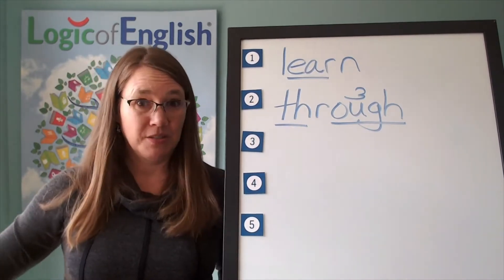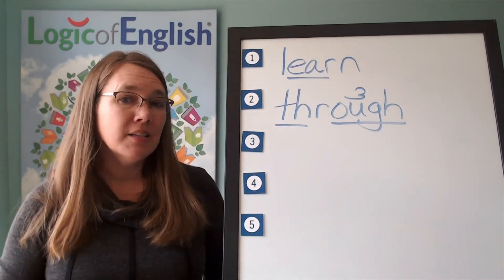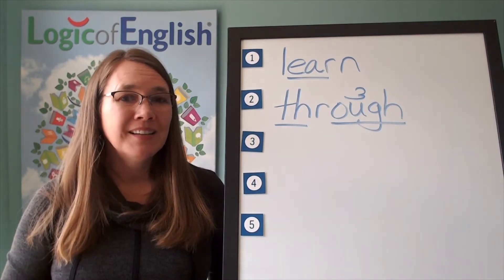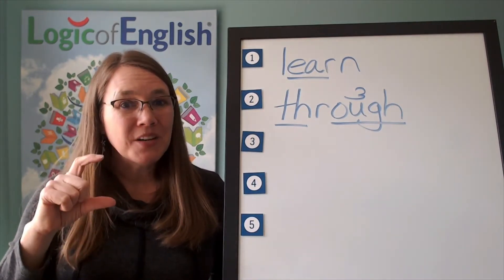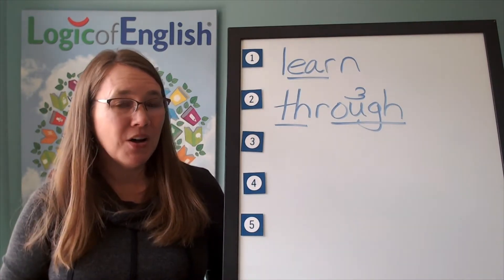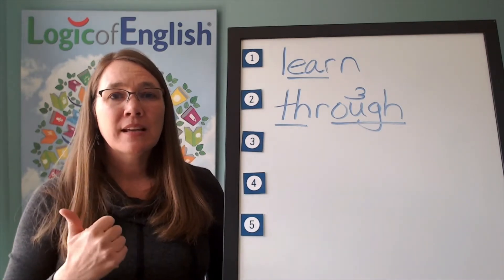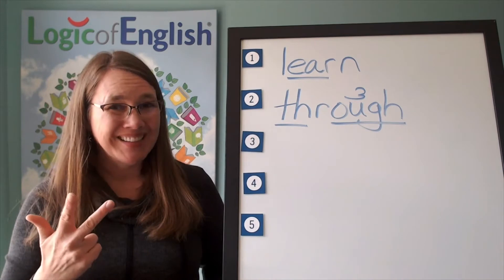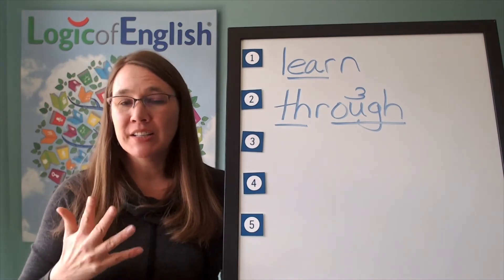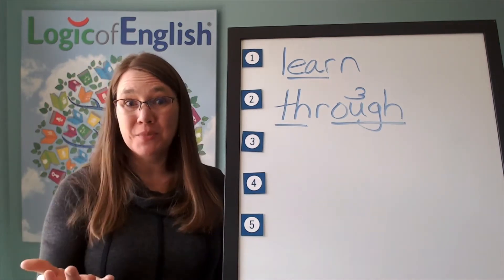The next word is 'small.' The cat is very small. Small. Go ahead and say 'small.' Let's sound it out. S-m-aw. This is an A-A-aw. L-l. Go ahead and write 'small.'